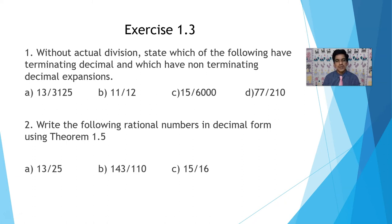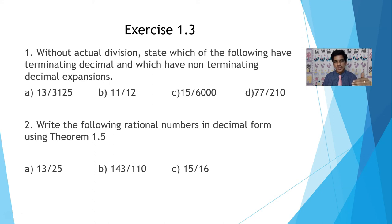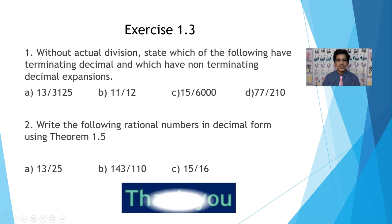The second set asks to write the following rational numbers in decimal form using Theorem 1.5. Follow the same procedure: check whether powers of 2 and 5 in the denominator are equal; multiply numerator and denominator accordingly by 2 or 5 to make the powers equal; then cancel common factors from numerator and denominator and do the prime factorization. Solve these problems and post the answers. It is a very important concept. Thank you.